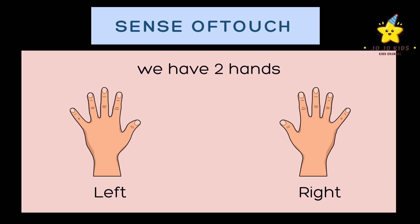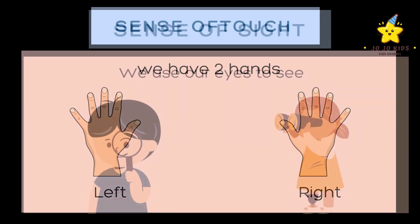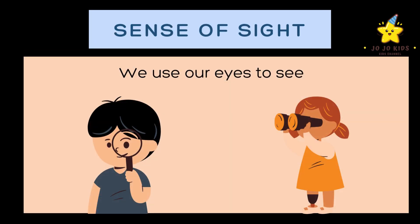Sense of sight — dekhna ki hiss. We use our eyes to see. ہم اپنی آنکھوں کو دیکھنے کیلئے استعمال کرتے ہیں. We have two eyes.